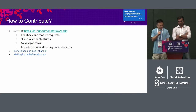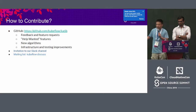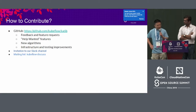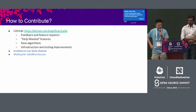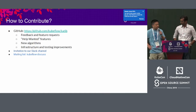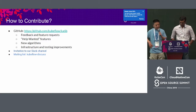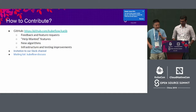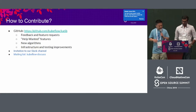How do you contribute? You can find us on GitHub — feel free to try our service, submit feedback, and feature requests. There are lots of features to help with. A great way to contribute is to help with infrastructure and testing improvements, or by adding new algorithms. We currently support maybe five or six different algorithms. Our intention is for Katib to be an open source platform for generic automated machine learning, and we really welcome contributions. There's also an invitation to our Slack channel if you're interested.